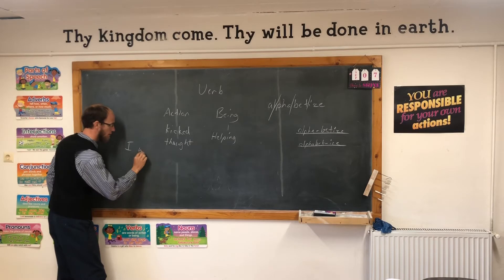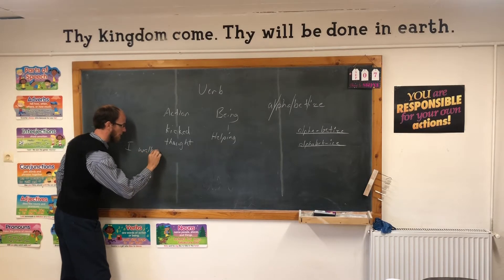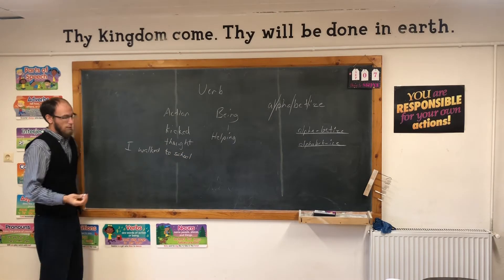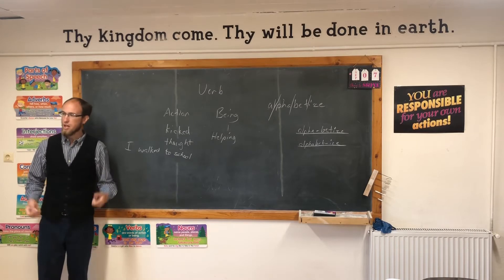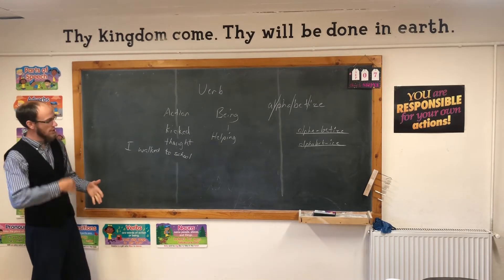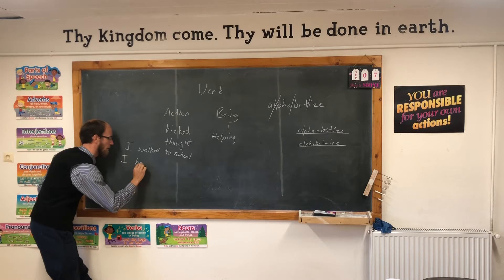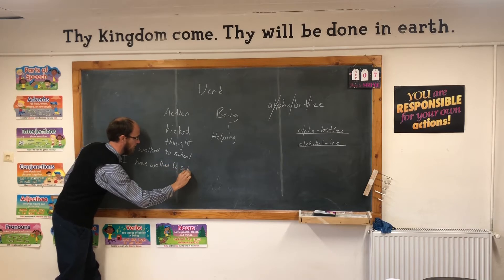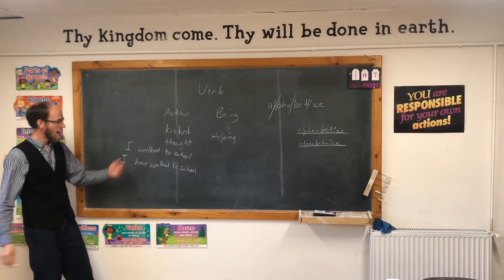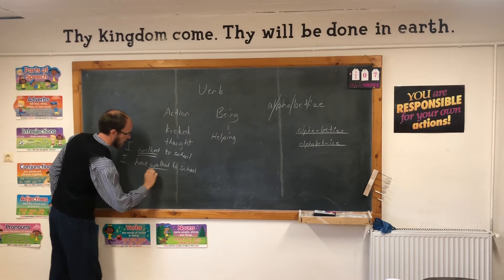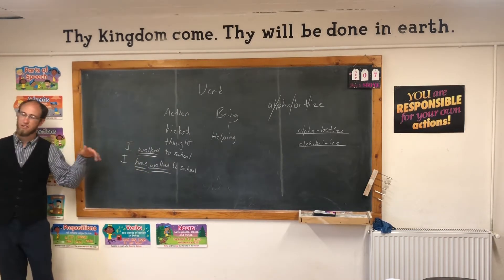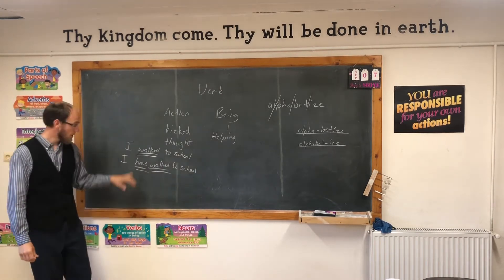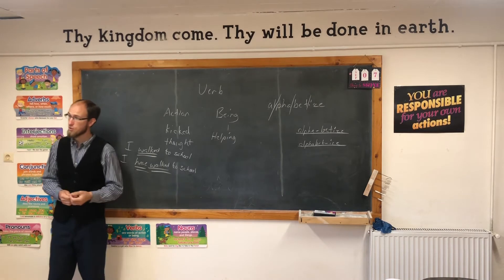'I walked to school.' Now suppose you want to emphasize it, or you want to say it happened in the past: 'I have walked to school.' So the verb 'walked' gets a helping verb 'have' just to show us that this happened in the past. Being verbs are part of the helping verbs: 'He is walking to school' uses 'is'; 'I am walking' uses 'am'; 'We are walking' uses 'are'.